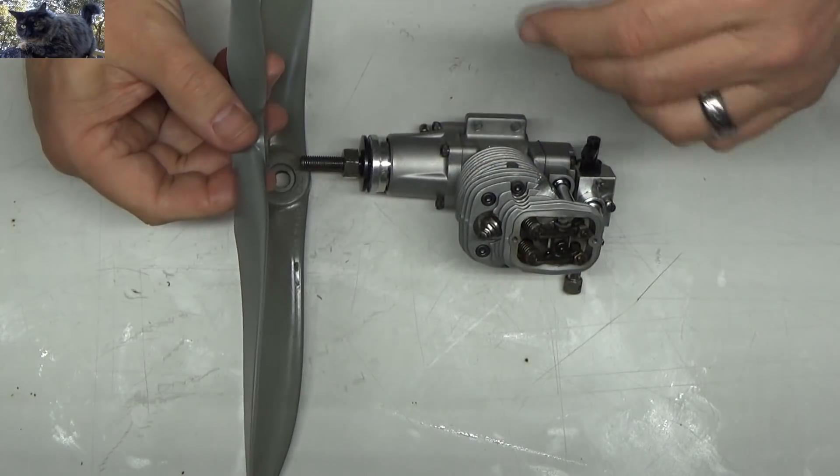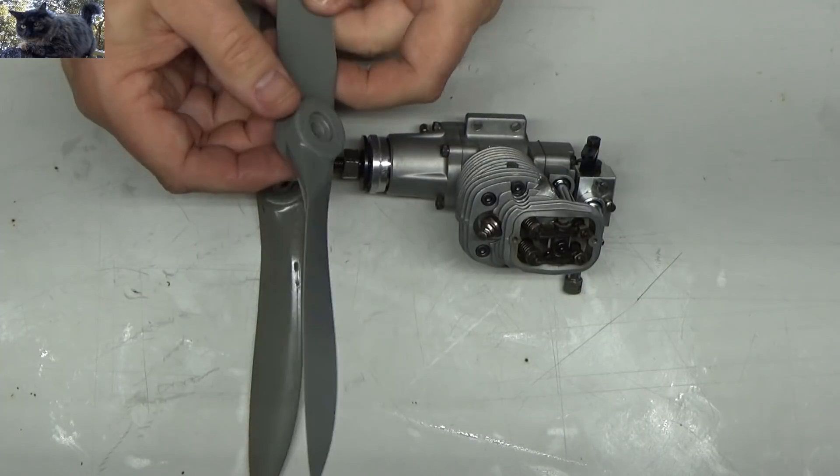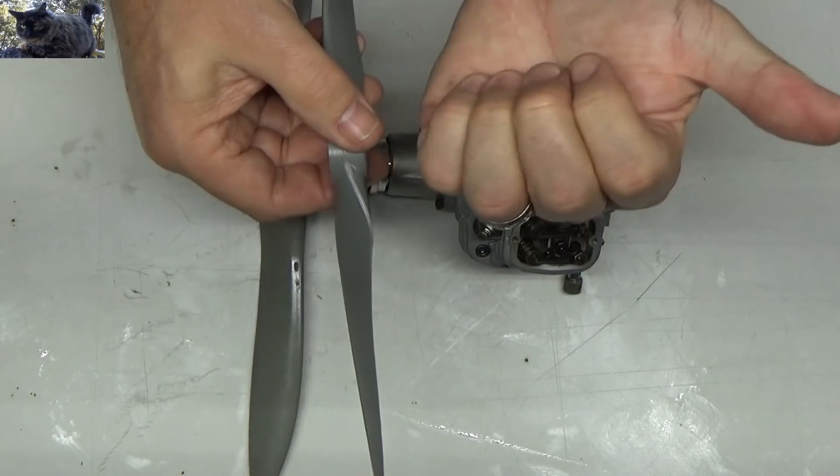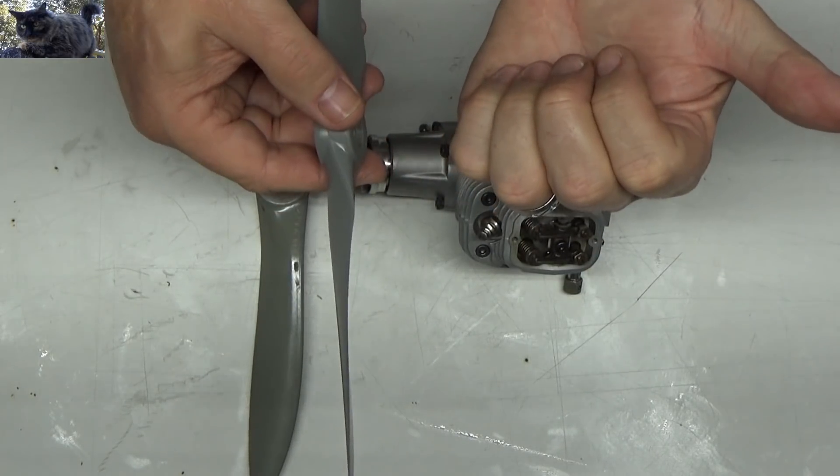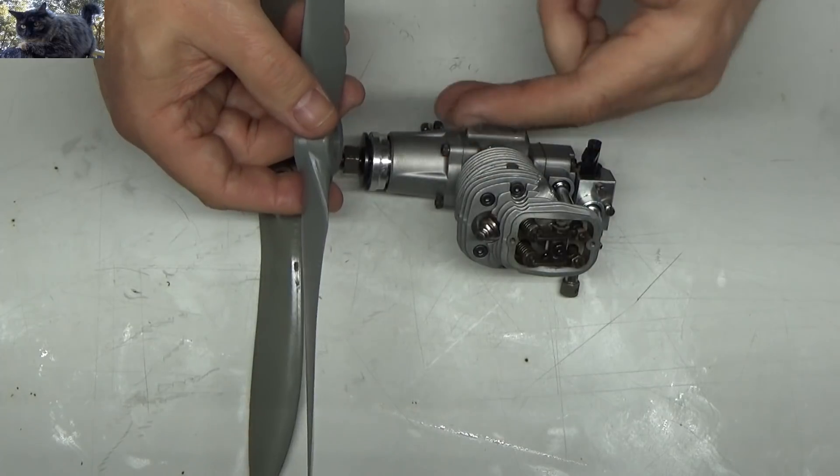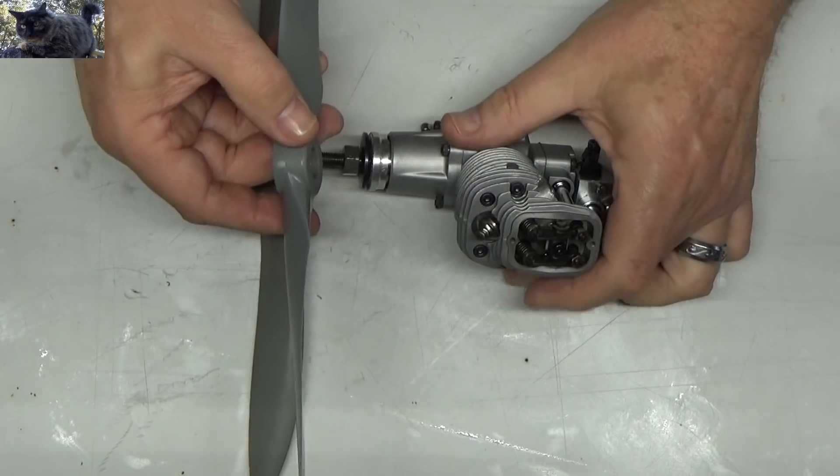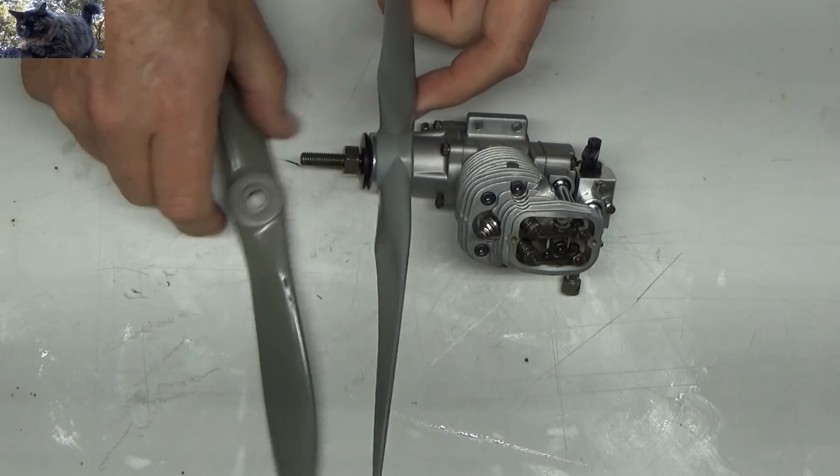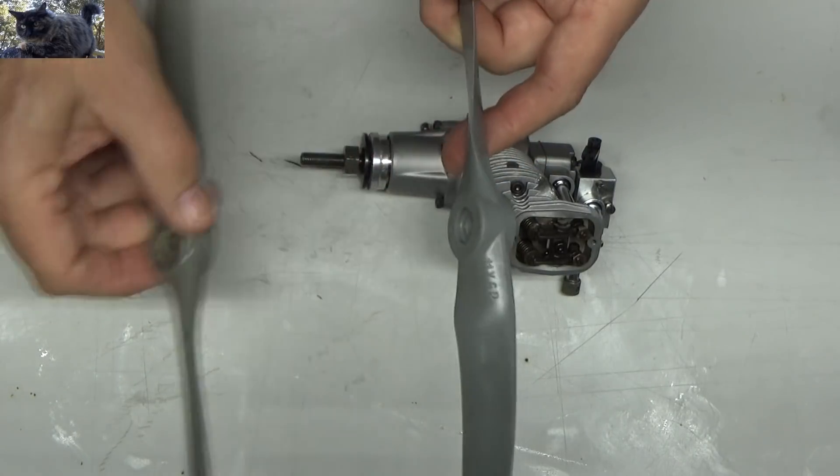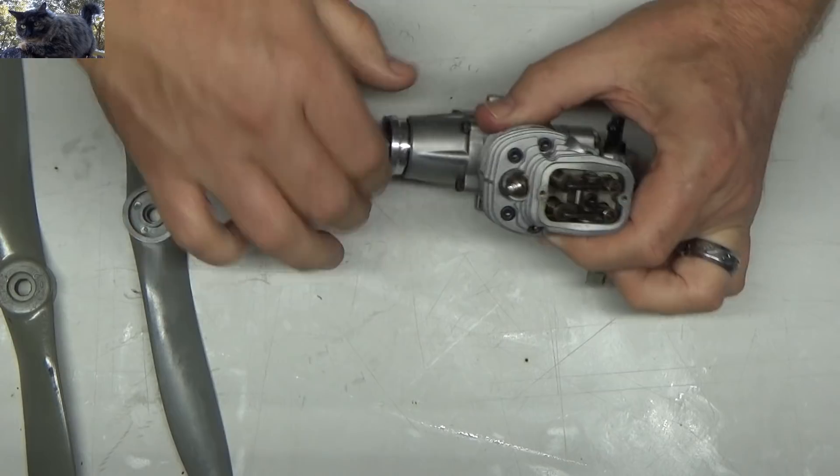So if I were to install a pusher prop just like I normally would and this was actually on the engine and the front of the plane was this way and it was a normal rotation, this would be fine because then it would be generating thrust going that way. But since this is a counter rotation engine or just a reverse rotation, I need a pusher prop so that when it rotates counter, it's actually producing thrust going this way. It's more important obviously if you're actually putting it on a plane and you're trying to run it that way, but I wanted to do it that way also on my stand so that it still provides cooling air going this way over the engine.